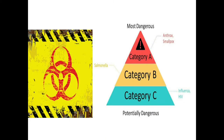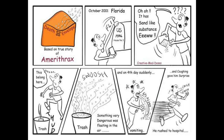Anthrax is one of the most likely agents to be used as a bioweapon because anthrax spores are easily found in nature, can be produced in a lab, and can last for a long time in the environment. Anthrax makes a good weapon because it can be released quietly and without anyone knowing. The microscopic spores could be put into powders, sprays, food, and water — because they are so small, you may not be able to see, smell, or taste them. Anthrax has been used as a weapon around the world for nearly a century.